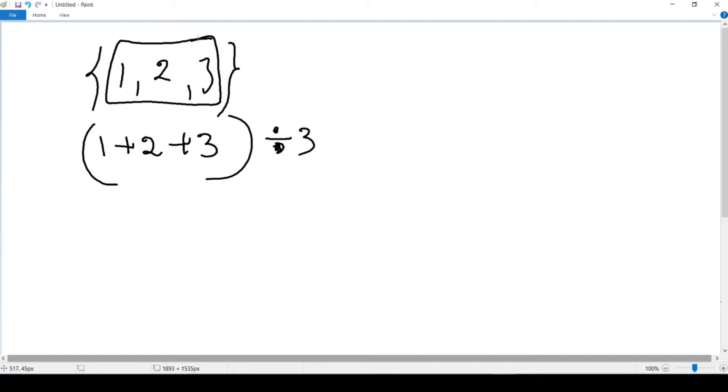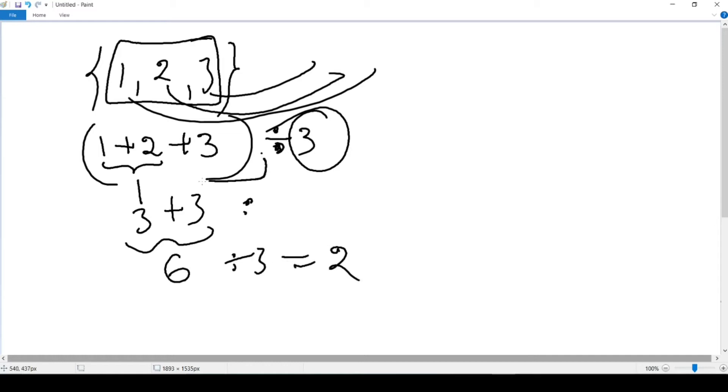So we will have 1 plus 2 which is 3, plus 3 which is 6, and now divide by 3 equals 2. Why did we perform this one first? Remember in our video on order of operations, when there is parenthesis we do the parenthesis first.